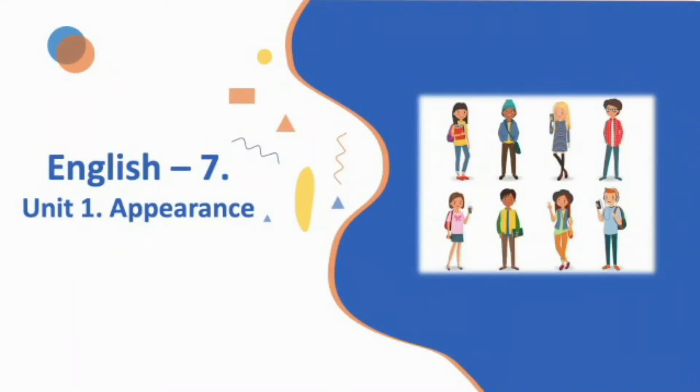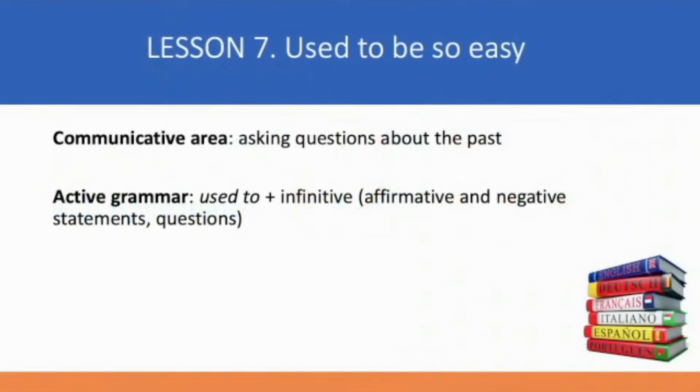Welcome to Unit 1. It's called Appearance, and today we are dealing with Lesson 7: Used to be so easy. My name's Alexandra and today we are working together. The communicative area of the lesson includes asking questions about the past. Active grammar is the construction 'used to' plus infinitive in affirmative and negative statements and questions. So let's start.